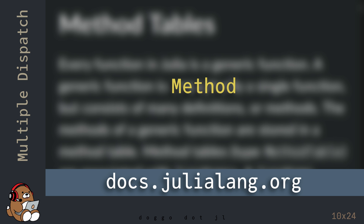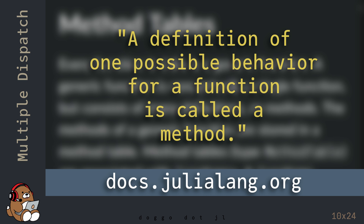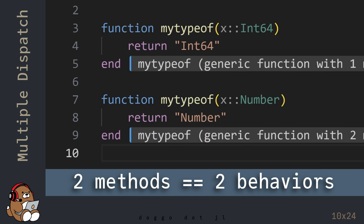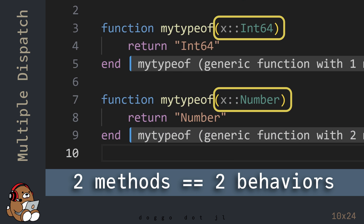In Julia, the term method means something very different from object-oriented languages like JavaScript and Python, where method means a function tied to some object. In Julia, a definition of one possible behavior for a function is called a method. So in this example, the function myTypeOf has two methods, meaning two possible behaviors, and Julia will determine which method to use based on the data type of the arguments.